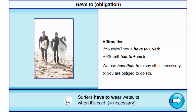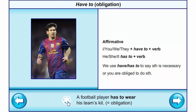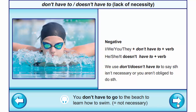Surfers have to wear wetsuits when it's cold. A football player has to wear his team's kit. In negative sentences we use don't have to plus verb for I/we/you/they; he/she/it we use doesn't have to plus verb.